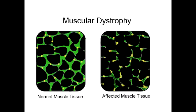Name the most common type of muscular dystrophy. The most common type of muscular dystrophy is Duchenne's muscular dystrophy. The cause of Duchenne's muscular dystrophy is X-linked recessive deletion of the dystrophin gene.